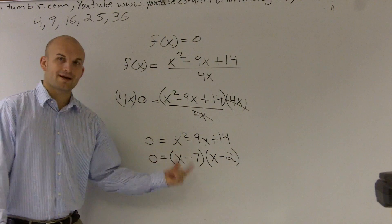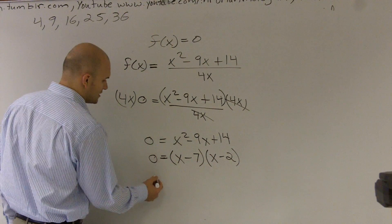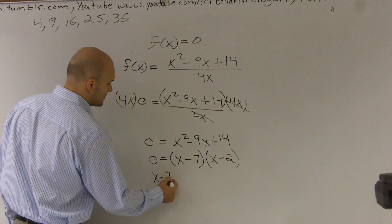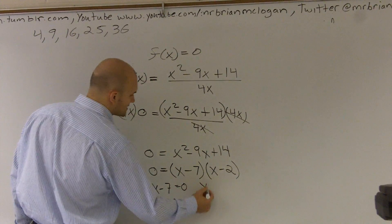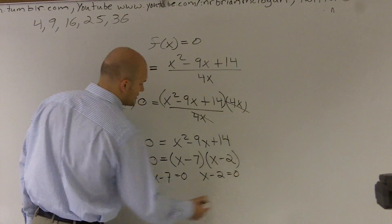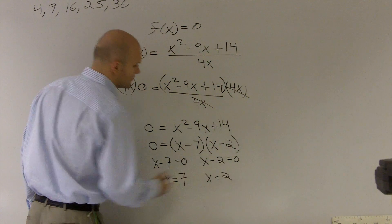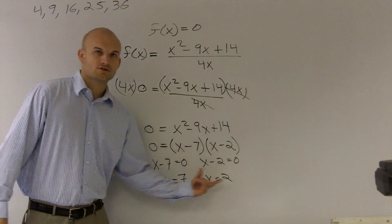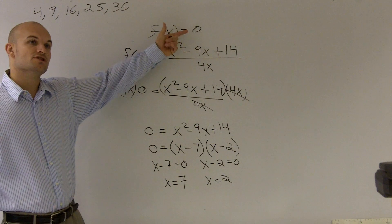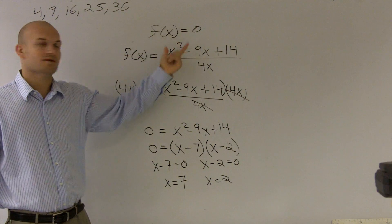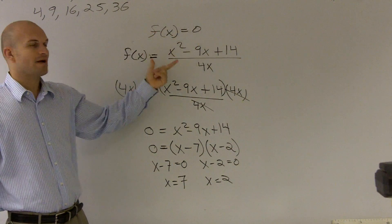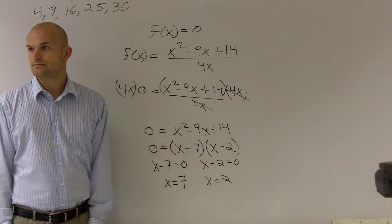Then I can say, all right, now I've got to solve for x for each one of those. So you say x minus 7 equals 0, or x minus 2 equals 0. So therefore, x equals 7, and x equals 2. So therefore, those two values make my function 0. So they're going to provide me the zeros on my equation. All right?